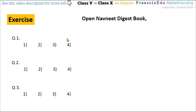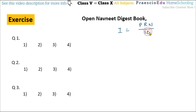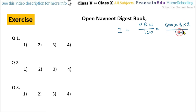Now the exercise on page number 295. Question number 1: how much is the simple interest on ₹600 for 2 years at the rate of 8% per annum? Using I = P × R × N / 100: 600 × 8 × 2 / 100. The two zeros cancel, leaving 6 × 8 × 2 = 96. So the answer is ₹96, option number 4.